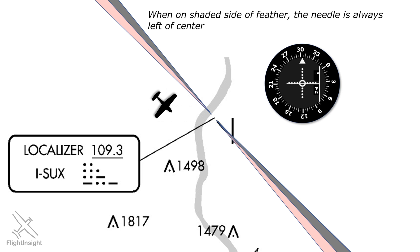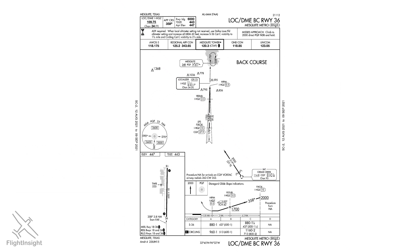If you can remember these points, it'll help you grasp the somewhat difficult topic of the back course. So why would you fly a back course? Some airports use a back course in an instrument approach procedure — there are a few dozen of these throughout the country. Here's an approach plate at Mesquite Metro in Texas. This is the localizer back course approach to runway 36, which uses the same localizer antenna as the ILS approach to the opposite runway, 18. So why not just build a second localizer for runway 36?